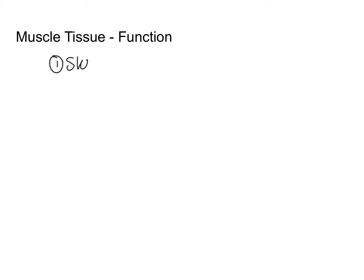Now let's look at the functions of the different types of muscle tissue, starting with skeletal muscle. The main function is to move the skeleton — either moving the entire body or moving your limbs around. That's the primary function of skeletal muscle tissue.